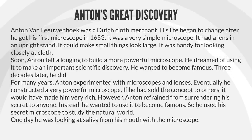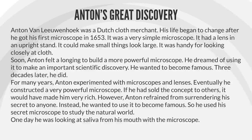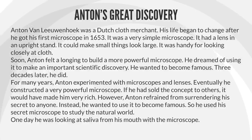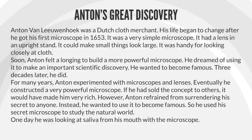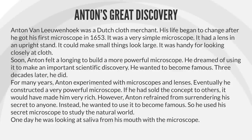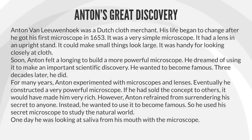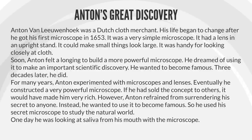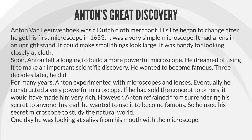Anton's Great Discovery. Anton van Leeuwenhoek was a Dutch cloth merchant. His life began to change after he got his first microscope in 1653. It was a very simple microscope. It had a lens and an upright stand. It could make small things look large. It was handy for looking closely at cloth. Soon Anton felt a longing to build a more powerful microscope. He dreamed of using it to make an important scientific discovery. He wanted to become famous. Three decades later he did. For many years Anton experimented with microscopes and lenses. Eventually he constructed a very powerful microscope. If he had sold the concept to others, it would have made him very rich. However, Anton refrained from surrendering his secret to anyone. Instead, he wanted to use it to become famous. So he used his secret microscope to study the natural world.